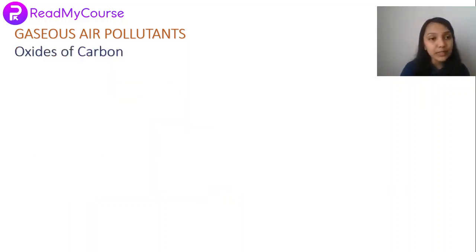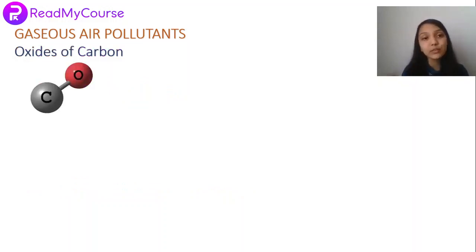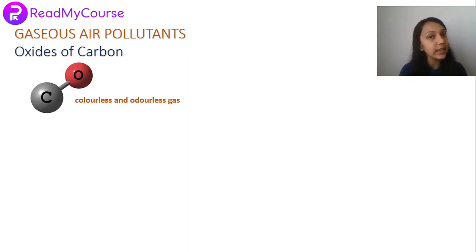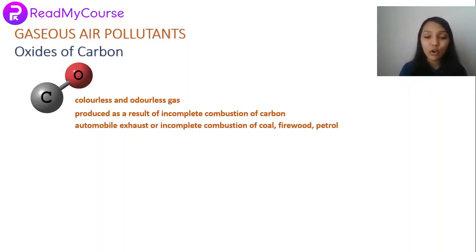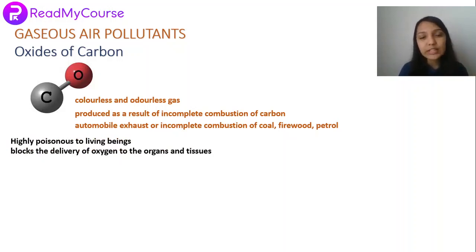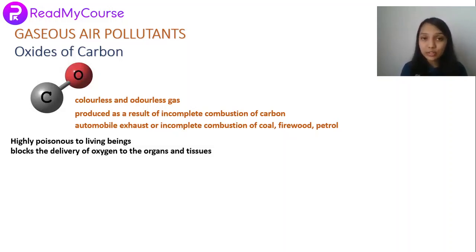The oxides of carbon include carbon monoxide (CO — carbon triple bonded to oxygen). Carbon monoxide is a colorless and odorless gas produced by incomplete combustion of carbon. It is released from automobile exhaust and from incomplete combustion of coal, firewood, and petrol. Carbon monoxide is highly poisonous to living beings — it blocks the delivery of oxygen to organs and tissues. We all know how vital oxygen is; we cannot survive without it, and CO just blocks its delivery.